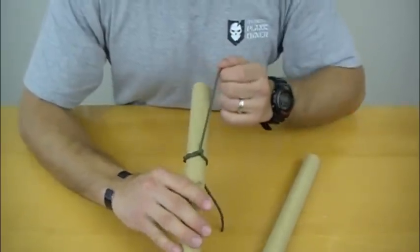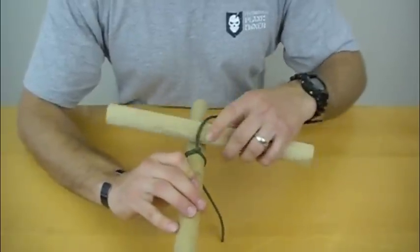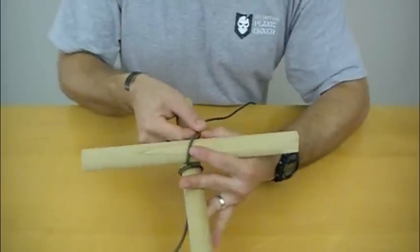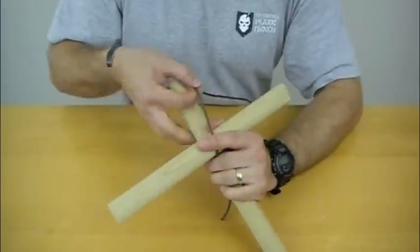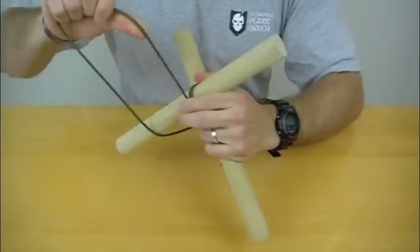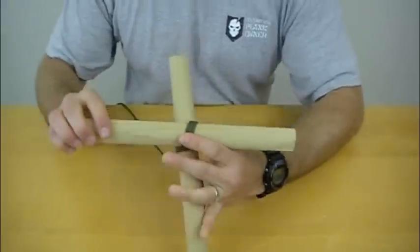Once you have your timber hitch set up, you're going to take your diagonal post that you're crossing with, essentially making a cross with your posts, and you're going to make three turns around that post.